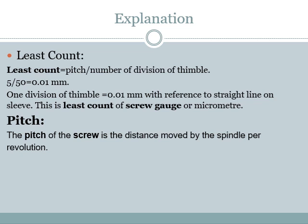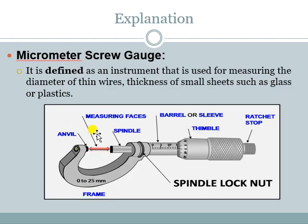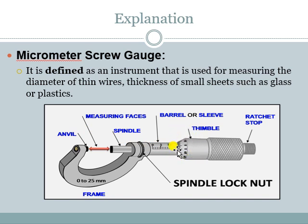What is pitch? The pitch of the screw is the distance moved by the spindle per revolution. Looking at the diagram, you can see the index line and the circular scale. Pitch means the distance covered horizontally along the index line when we revolve the circular scale for one full rotation — that is, how much distance is covered along the index line per rotation. This is known as the pitch of the screw gauge.